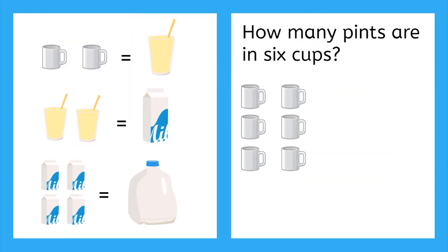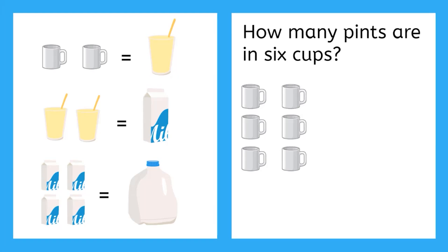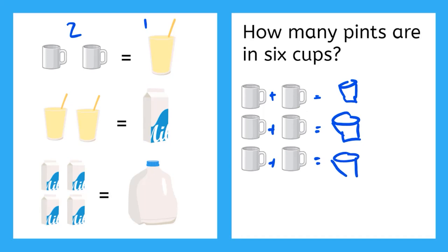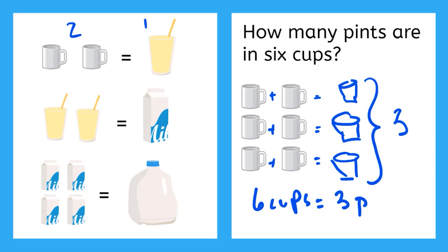Using the chart, how many pints fit in six cups? Well, if I know that two cups is equal to one pint, then these two cups here are equal to one pint, these two are equal to another pint, and these two are equal to another pint. So if we add all of these pints up, we have three. Six cups equals three pints.